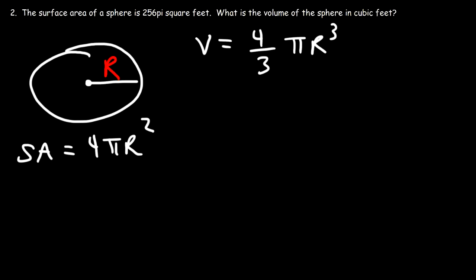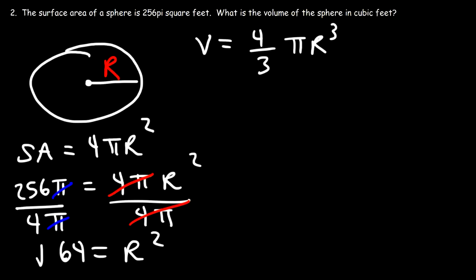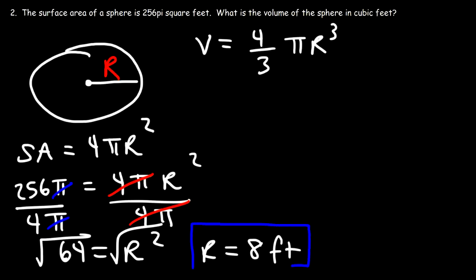Setting 4 pi r squared equal to 256 pi, we divide both sides by 4 pi. The pi cancels, and 256 divided by 4 is 64, so r squared equals 64. Taking the square root of both sides, the square root of 64 is 8, so the radius is 8 feet.